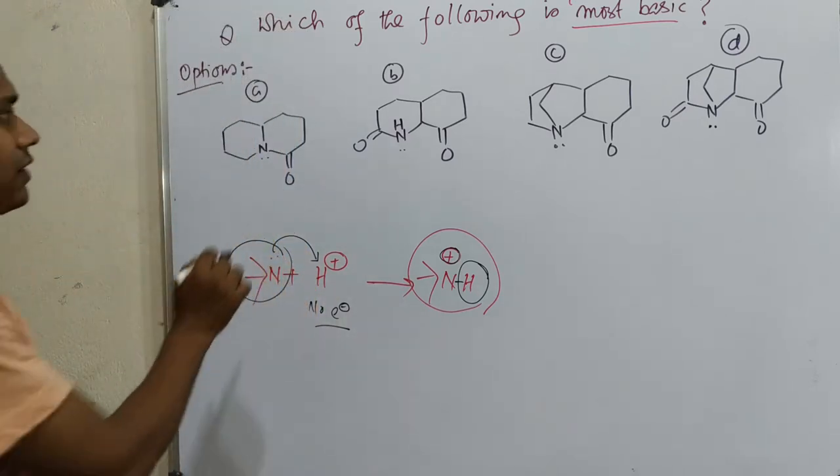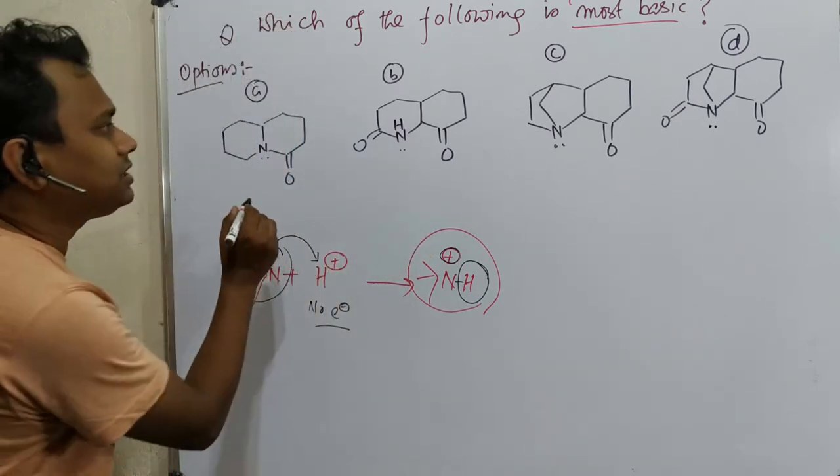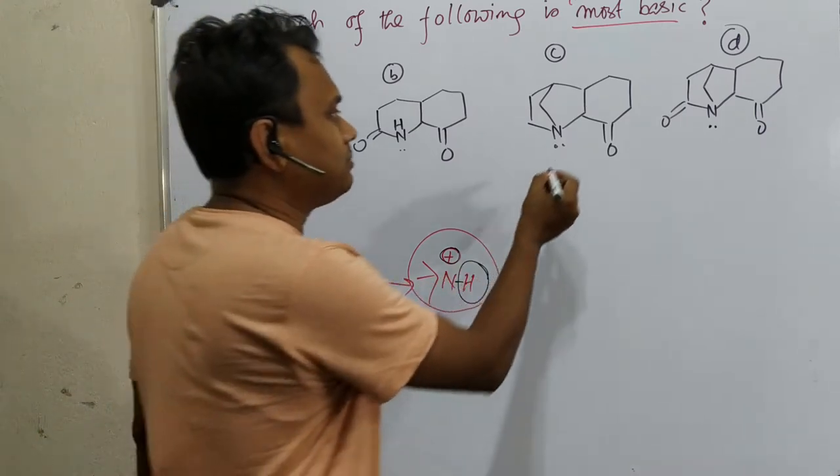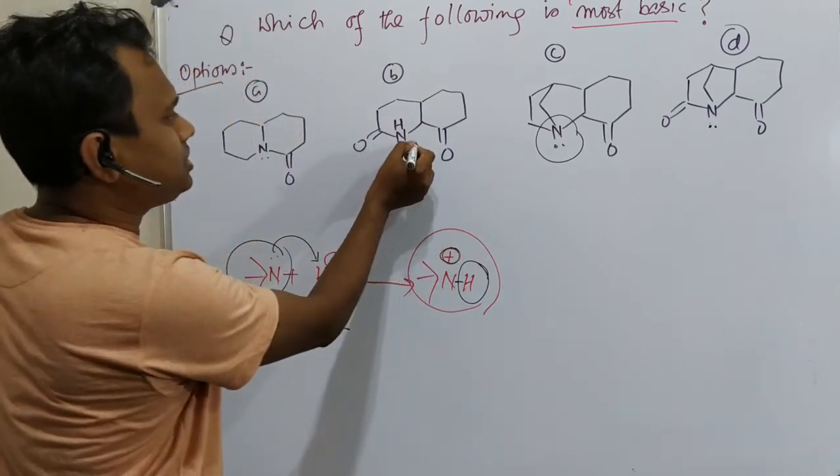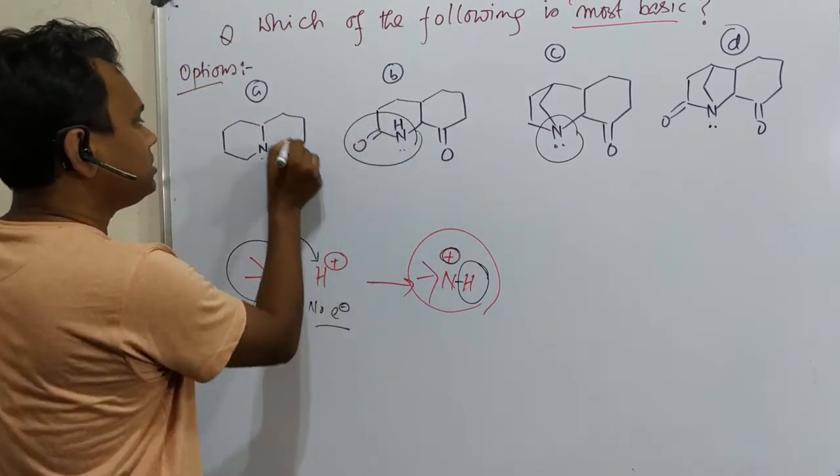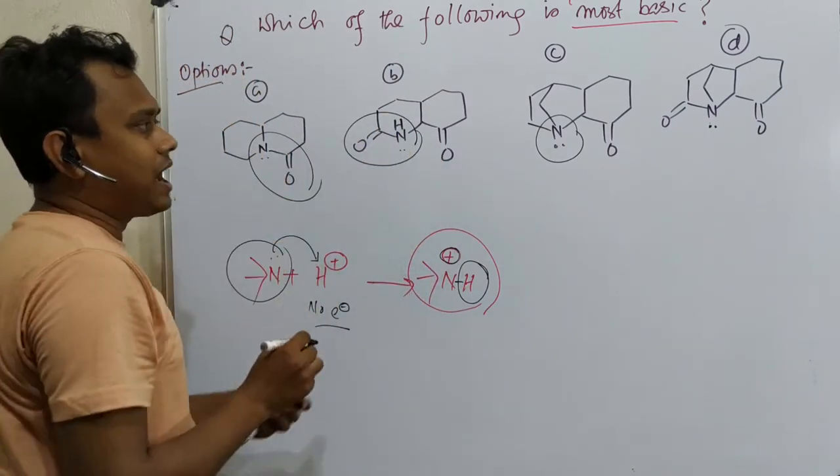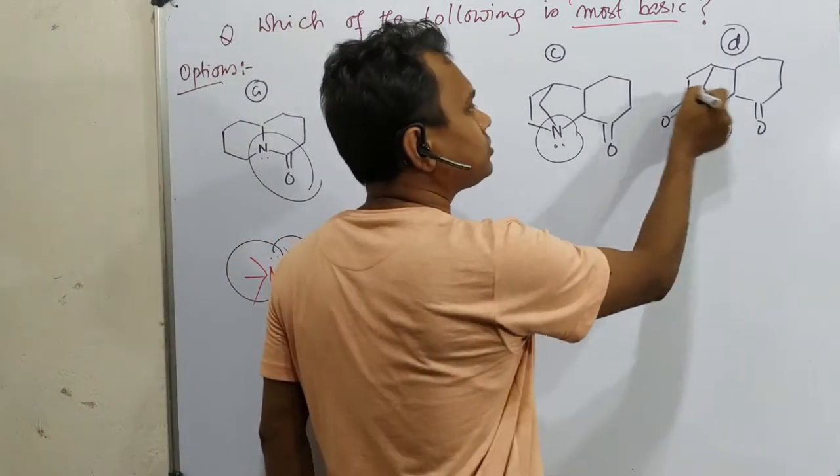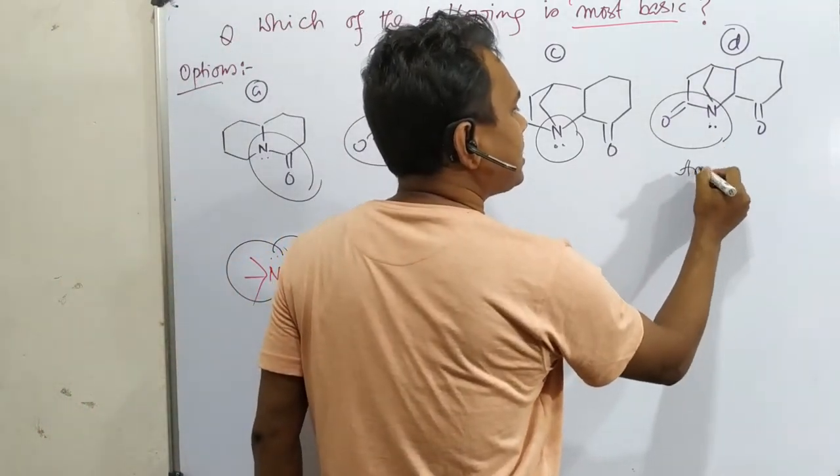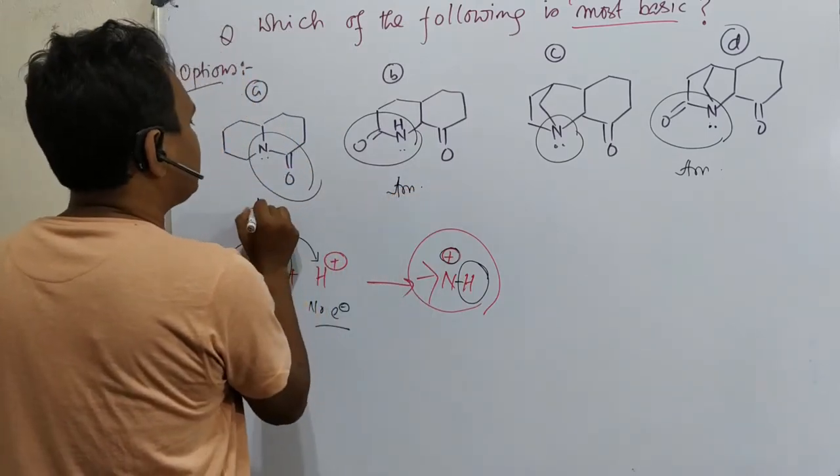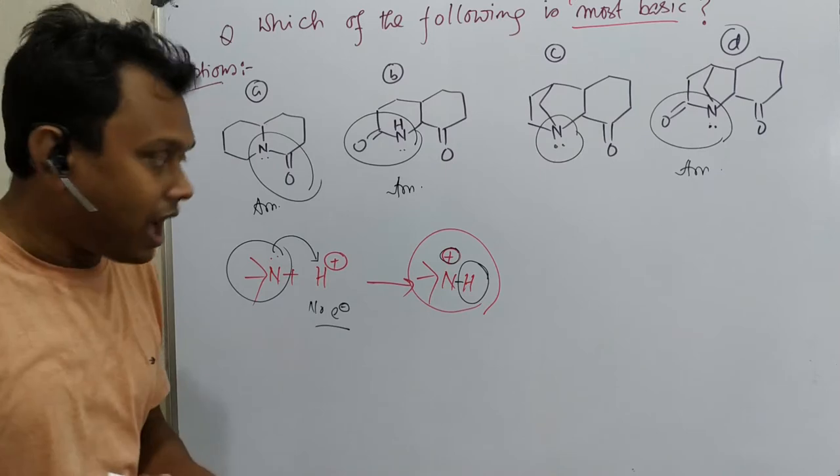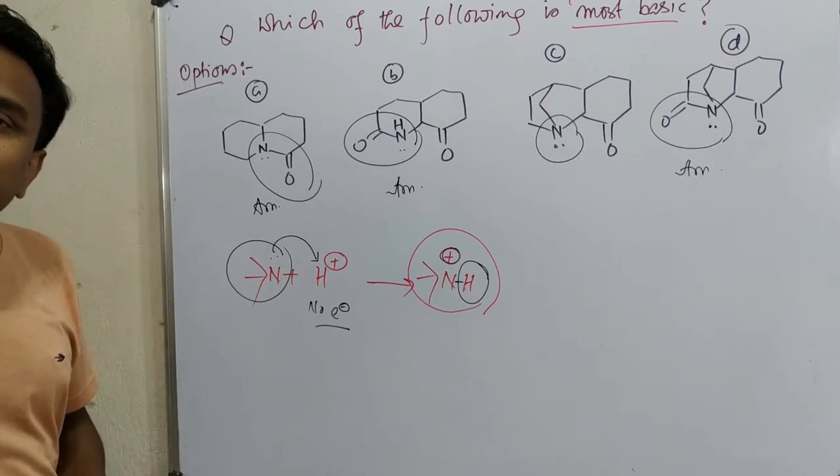Here we have the viewpoint that availability of nitrogen, electron density of nitrogen is the interesting thing. Now if you look at everything, what are the nature of two kinds? A simple amine, you can consider. This is amine, this is also amine, this is also amine, and this is also amine. The question asked which is the most basic?